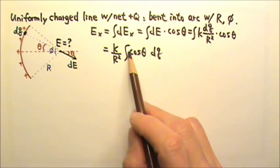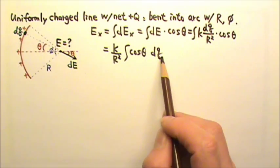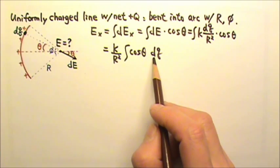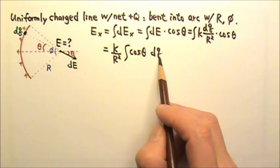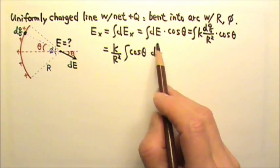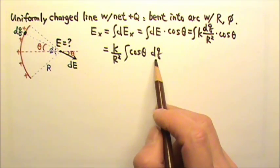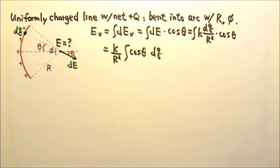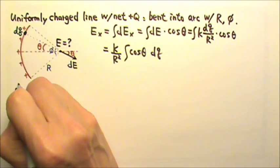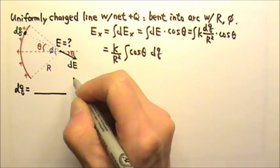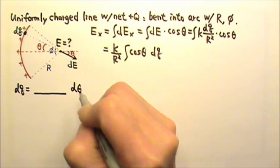Now we have a function of theta, but we still have dq. If the integrand is a function of theta, then we would like the differential to be d theta. So what we have to do is rewrite dq and turn it into something times d theta.